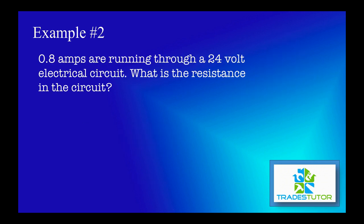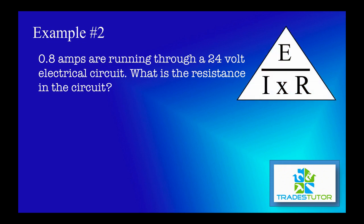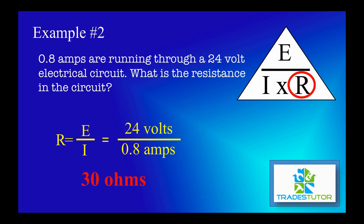Same thing once again. Go to another example. 0.8 amps are running through a 24 volt electrical circuit. What is the resistance? Throw down our triangle. Now we're going to solve for R. And R is equal to E over I, or volts over amps. Put in our variables, 24 volts, 0.8 amps. And what we end up with is 30 ohms.